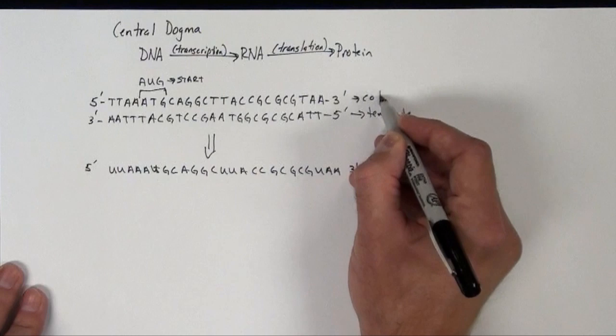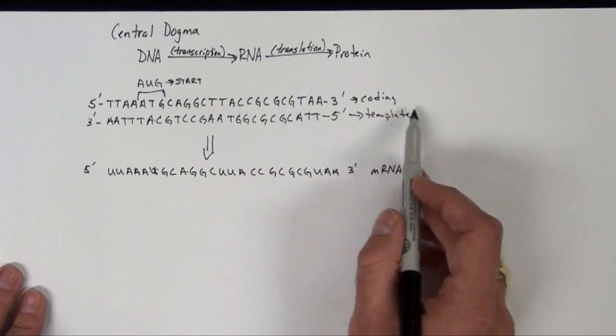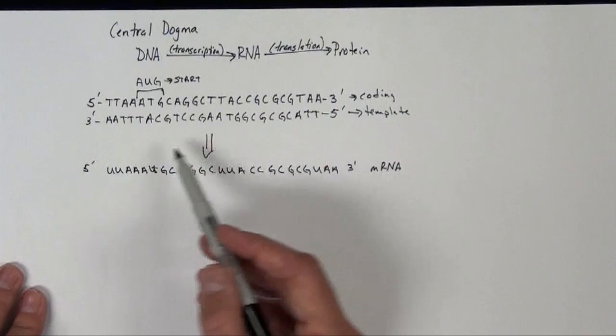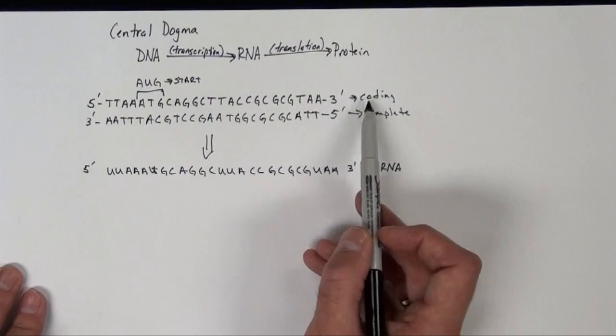So once again, the 3' to 5' here in this case is the template strand. It's actually what the RNA polymerase is reading. And then the enzyme, the RNA polymerase, is creating the mRNA molecule. And this, in terms of its sequence of letters, is identical to the 5' to 3' up here, which we would define now as the coding sequence.